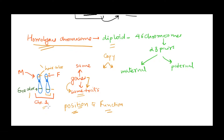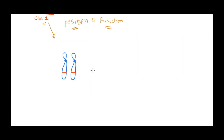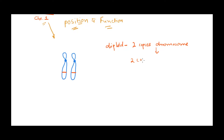Now let's talk about homozygous. As we said, we are a diploid organism, so we have two copies of every chromosome, and therefore two copies of every gene. We just saw that the eye color gene is present on one chromosome, and on the homologous chromosome it is also present. So we have two copies of every gene, which means we have two copies of every allele.